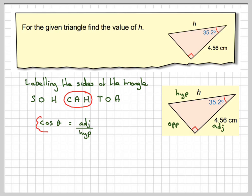Write down the formula. Cos theta is equal to adjacent over hypotenuse. And then put in the information, cos 35.2 is equal to 4.56 divided by h.